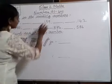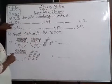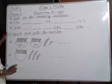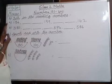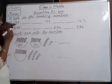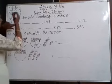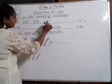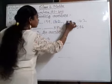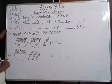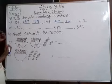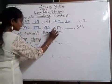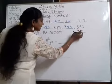Third question: fill in the missing numbers. First: 136 blank blank 139 blank blank 142. Say the numbers from 131: 131, 132, 133, 134, 135, 136, 137, 138, 139 — 140 is already given — 141, 142. Next sequence starting from 380: 380, 381, 382, 383, 384, 385, 386.